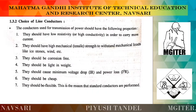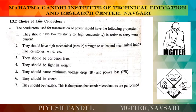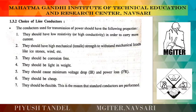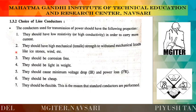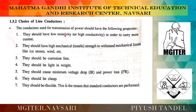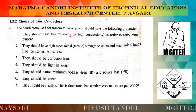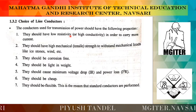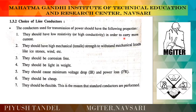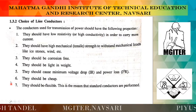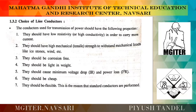We are going to see the choice of line conductor — how we are going to select our line conductors. Conductors used for transmission of power should have the following properties. First, they should have low resistivity. It is the most priority thing because if the resistivity is high, the current flowing through the conductor is going to be reduced. So they should have low resistivity, or we can also say high conductivity, in order to carry more current.